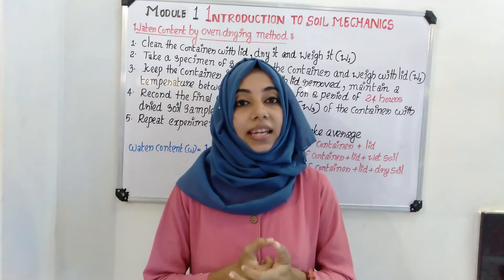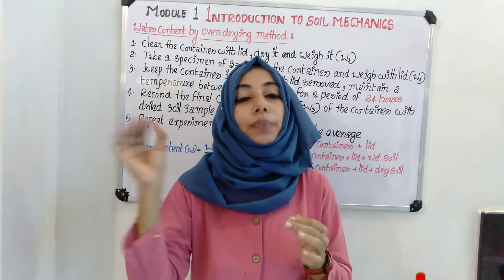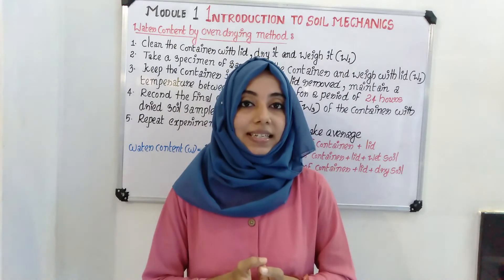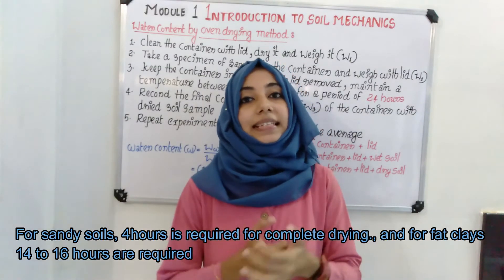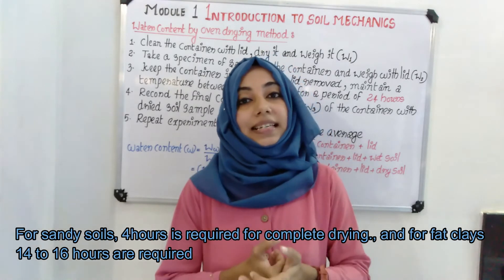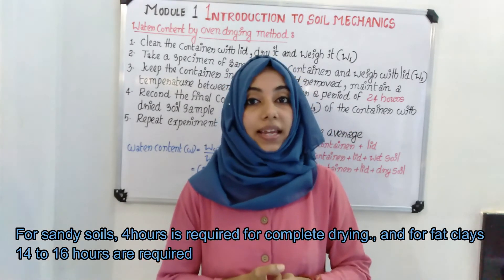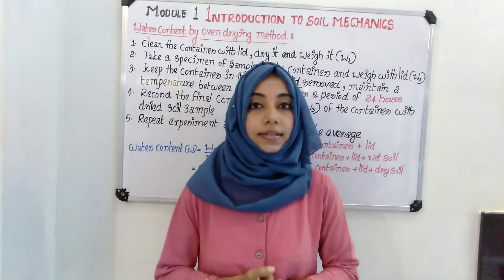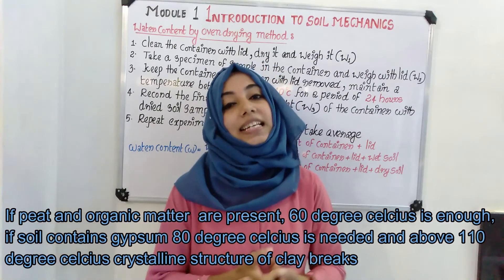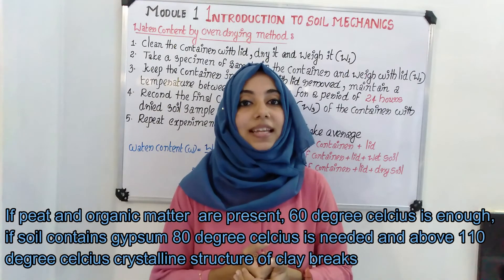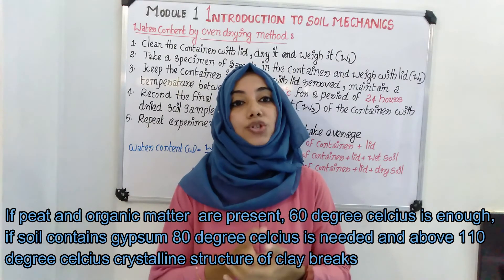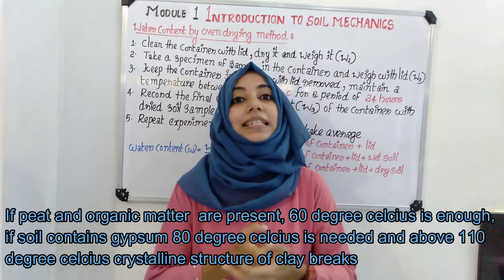Next, keep the container in the oven with the lid removed, and maintain a temperature of 105°C to 110°C for 24 hours. For sandy soils, 4 hours is sufficient for complete drying; for fat clay, 14 to 16 hours is needed. If peat or organic matter is present, 60°C is enough; if gypsum is present, 80°C is sufficient. Providing a temperature greater than 110°C breaks the crystalline structure of clay.